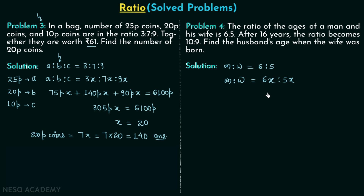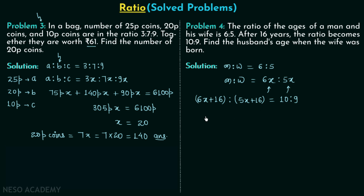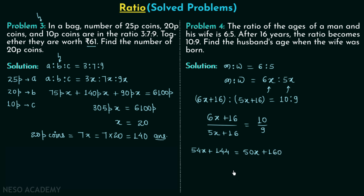After 16 years the ratio becomes 10:9, so we add 16 to each present age: (6X + 16):(5X + 16) = 10:9. Writing this in cross-multiplication form gives us 9(6X + 16) = 10(5X + 16), which expands to 54X + 144 = 50X + 160.